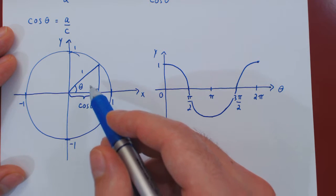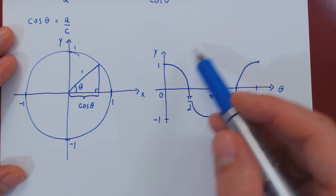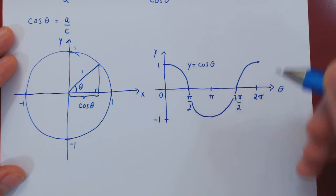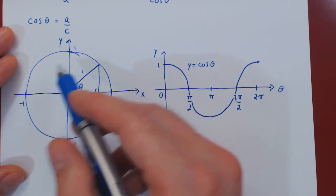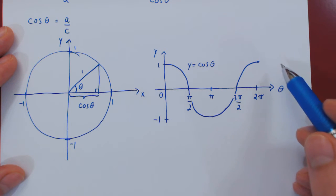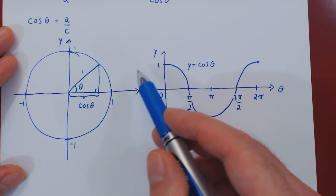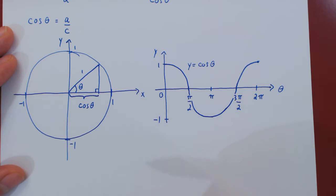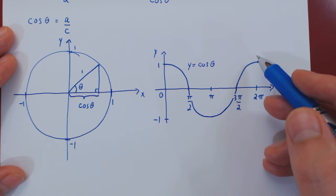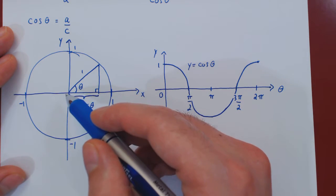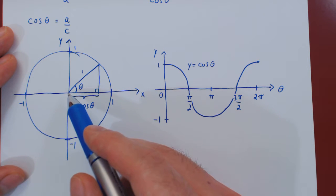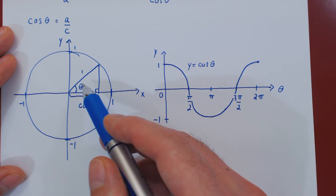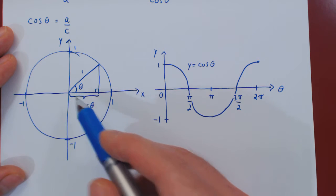Now we have done a complete 2π revolution, so we have the graph of cosine of theta. As we keep increasing the angle, we go around the same circle forever, so this piece will repeat itself forever. The same thing happens in the negative direction — taking negative angles means going clockwise around the circle.